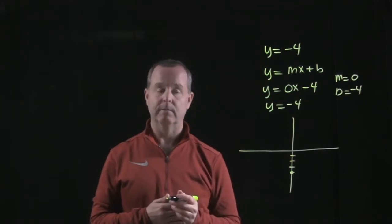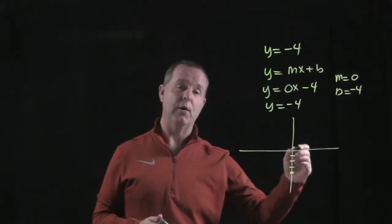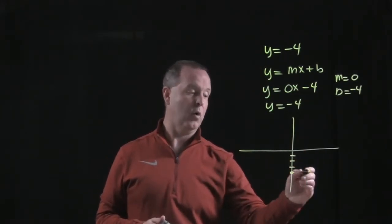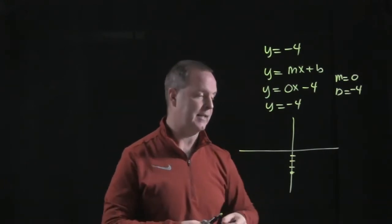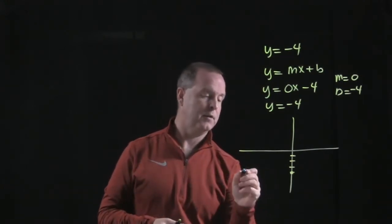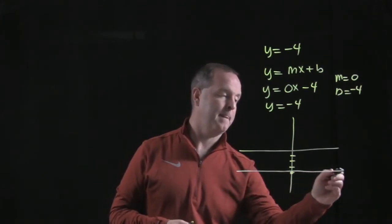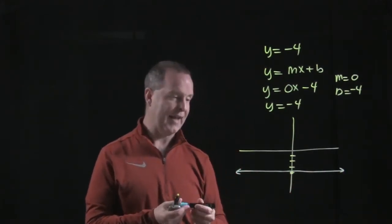And I have a slope of zero. That means I go up zero and over 1. Up zero, over 1. And that's just going to give me a consistently horizontal straight line at that value right there.